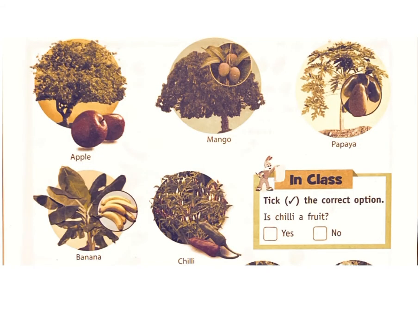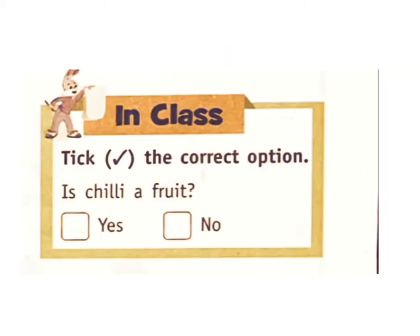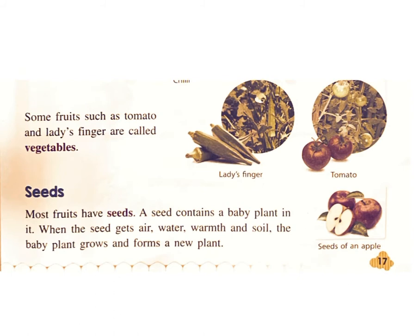Fruit: Different plants have different kinds of fruits. We eat many kinds of fruits. A chili is also a fruit — it grows on a chili plant. Examples: apple, mango, papaya, banana, chili. In class activity: Is chili a fruit? Answer: Yes.